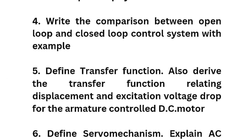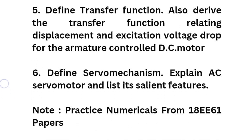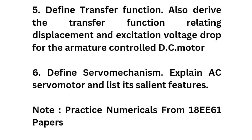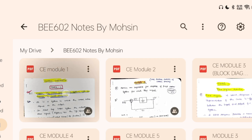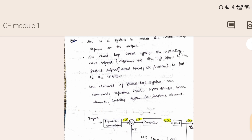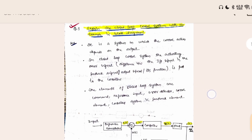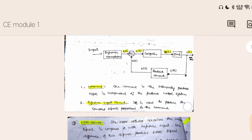Next, define the transfer function and derive the transfer function relating displacement and exciting voltage for the armature-controlled DC motor. Define servo mechanism, expand AC servo motor and list its salient features. For numericals, refer to 18EE61 papers. Let me show you the answers for these particular questions — this is your first module explaining the closed loop control system with an example and block diagram. All the theoretical questions are here so you can go through them and score well.